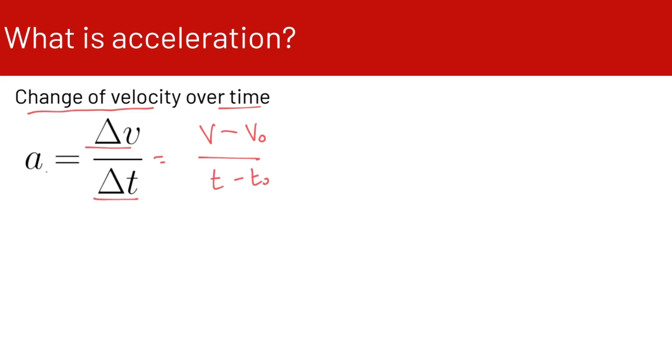So our final velocity minus the initial velocity divided by the final time minus the initial time — we can think of this as the average acceleration.